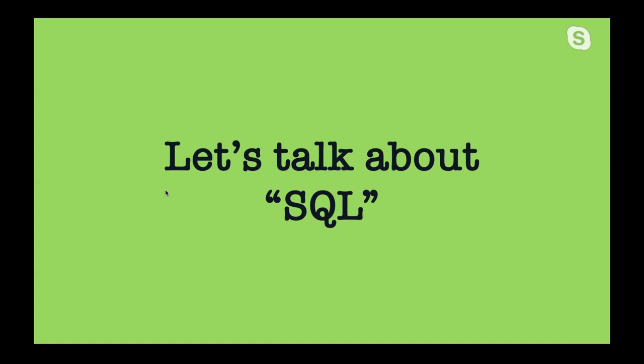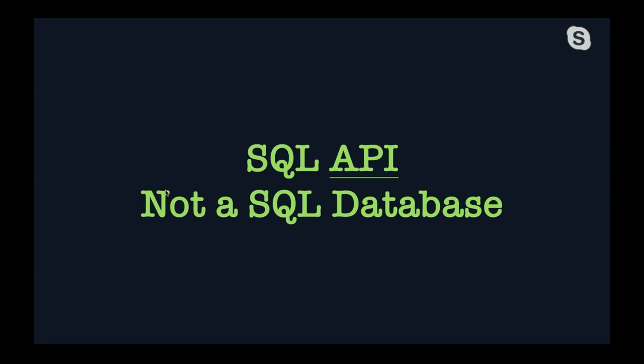Today I'm focused on the SQL API, talking about how to do relational modeling there — it's the one that gives people the most hiccups. The first thing to understand is it's a SQL API, but it is not a SQL database. This definitely trips people up. They come to Cosmos, start writing really complex SQL queries, and either they don't work or they're not very performant, because under the hood it's still not a SQL database — we're just exposing a SQL layer on top of your documents.